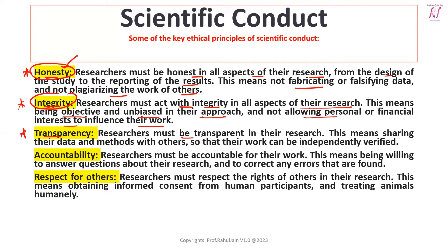Transparency means researchers must be transparent in their research. Their data and methods should be available publicly so that further work can be done and results can be verified. Accountability means researchers must be accountable for their work — being willing to answer questions about their research and correct any errors if found or pointed out by other researchers.